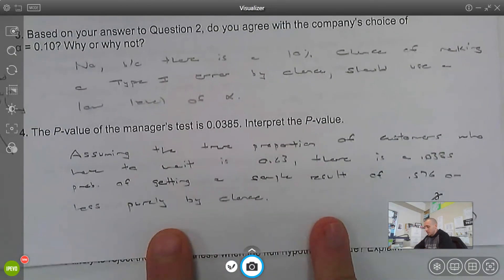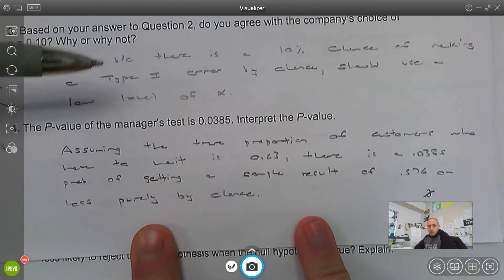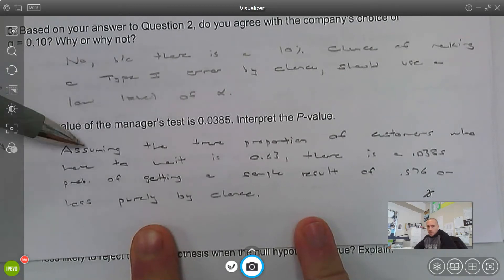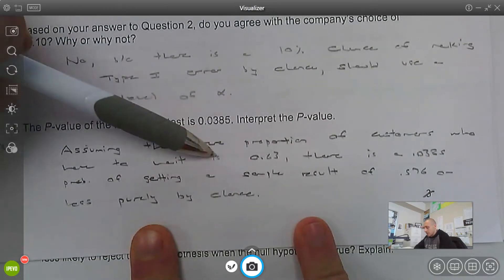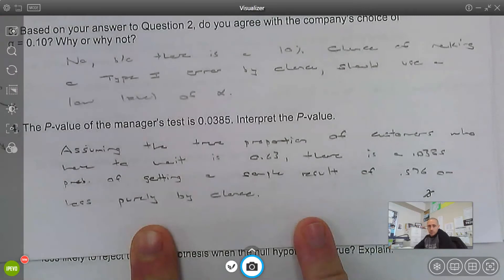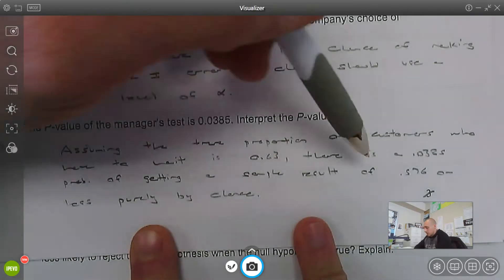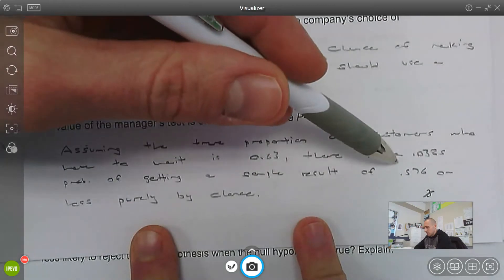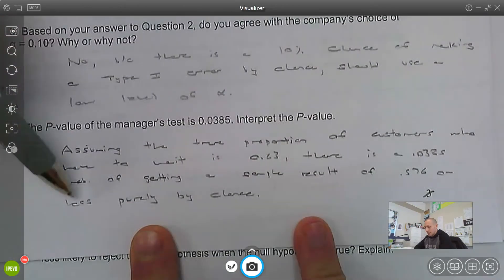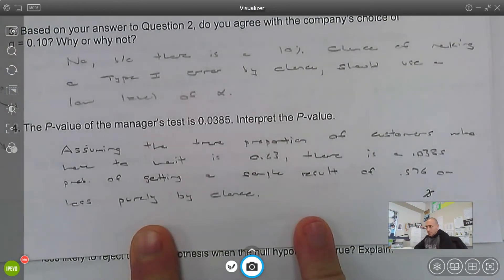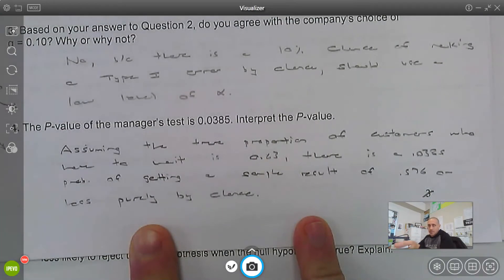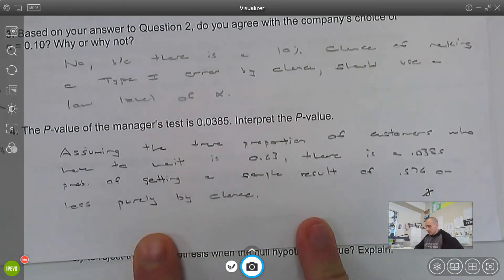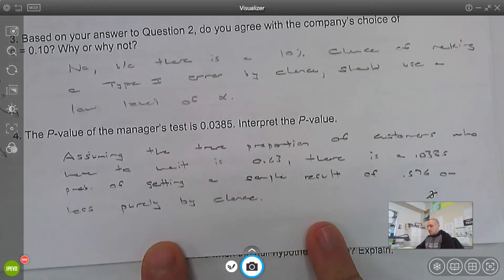And then number four, been there, done that. Assuming the true proportion of customers who have to wait more than two minutes is 0.63, that's assuming the null is true, there is a 0.035 probability of getting a sample result of 0.576 or less. Why or less? Because the alternative is less than, purely by chance.